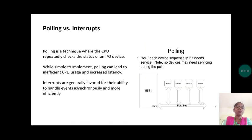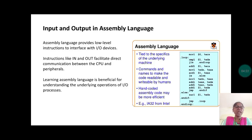Polling versus interrupts. Polling is a technique where the CPU repeatedly checks the status of an input output device. While simple to implement, polling can lead to inefficient CPU usage and increased latency. Interrupts are generally favored for their ability to handle events asynchronously and more efficiently.